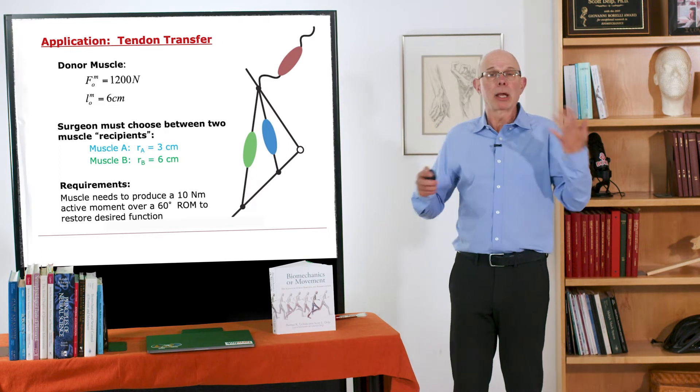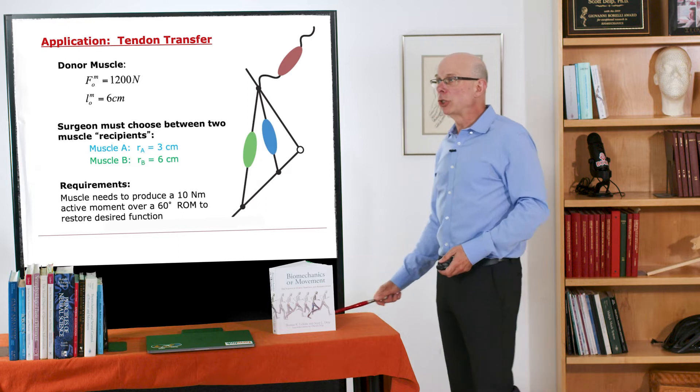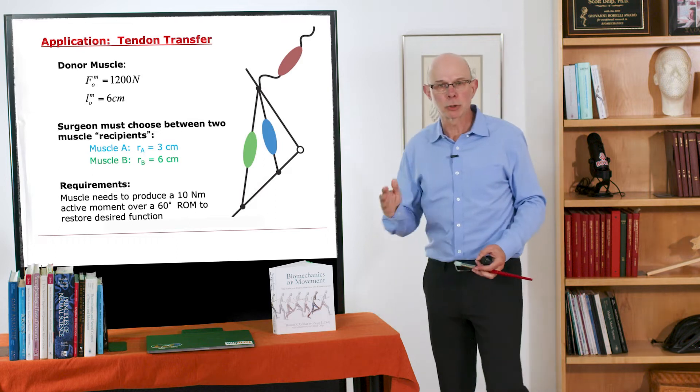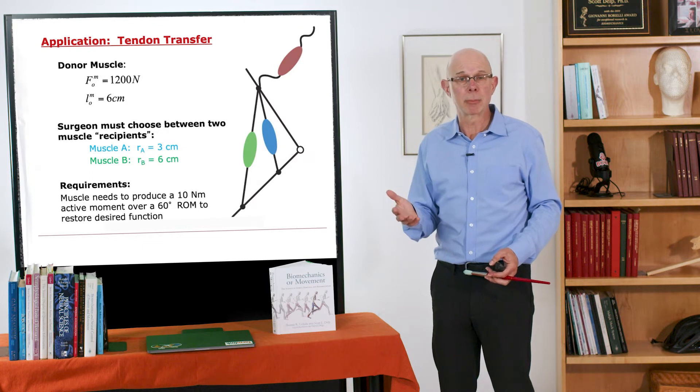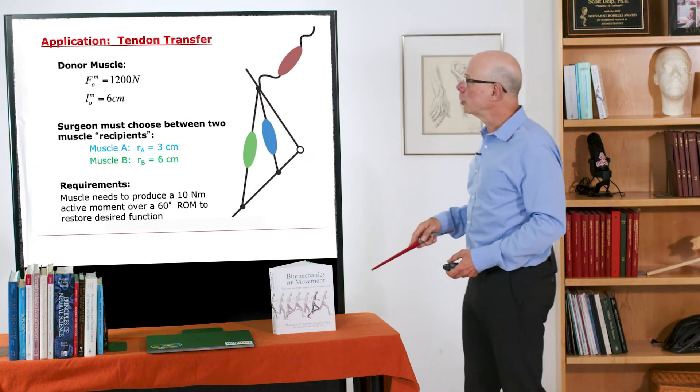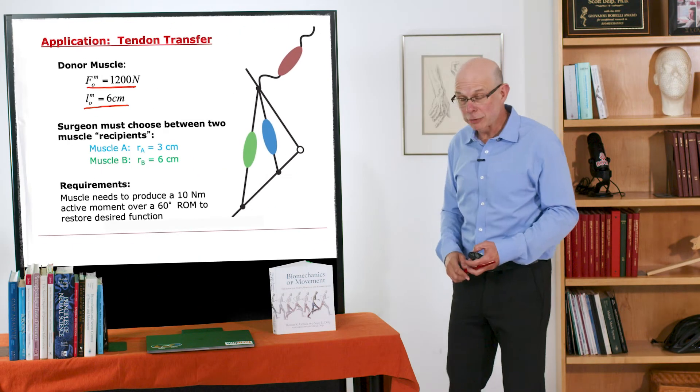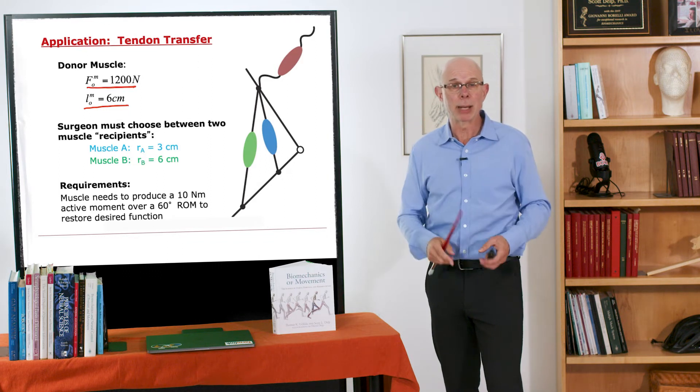Let's take a generic example of a tendon transfer. Let's say we have a donor muscle that we're going to show is here. We've taken this muscle from another location. Maybe it's a redundant muscle that has another adjacent muscle that does about the same thing. And we can attach it to one of two places. This donor muscle has the following properties. It has a peak force generating capacity of 1200 newtons and it has an optimal fiber length of 6 centimeters. So we've just drawn its force length curve. It's going to peak at 1200 newtons and it's going to have a range of length of about 6 centimeters.